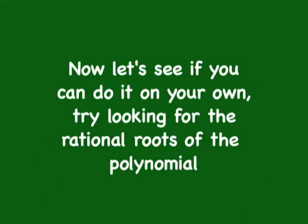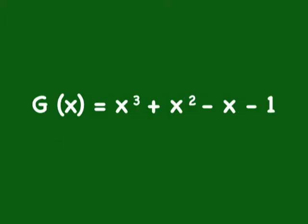Now let's see if you can do it on your own. Try looking for the rational roots of the polynomial g(x) = x³ + x² - x - 1.